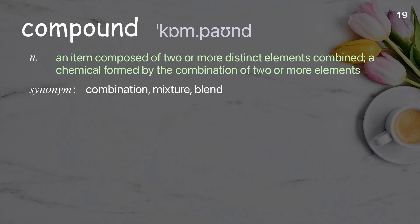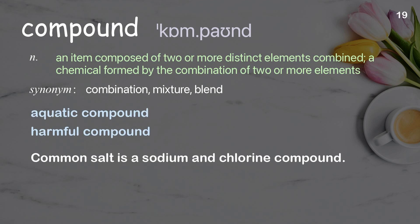Compound: an item composed of two or more distinct elements combined; a chemical formed by the combination of two or more elements. Examples: aquatic compound, harmful compound. Common salt is a sodium and chlorine compound.